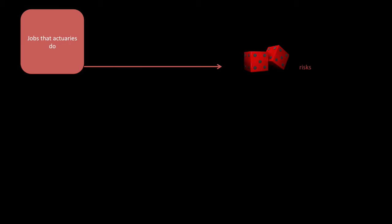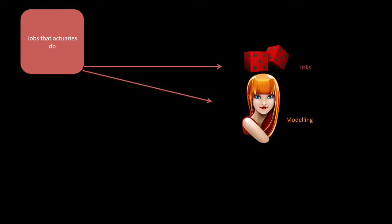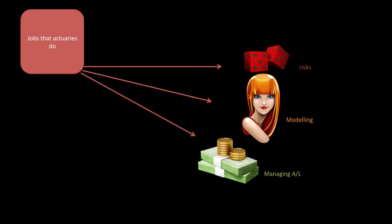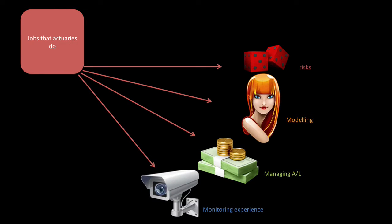Jobs that actuaries do. In general, actuaries assess, quantify, manage, and monitor risk. When it comes to risk, they can advise on reinsurance and risk transfer mechanisms. They build and test models and project and discount cash flows. They handle data, use economic and demographic analysis to estimate assumptions and decide on margins. They also manage future liabilities and advise on contribution rates, premium rates, and on investment strategy. Finally, actuaries also monitor experience — they compare the actual with expected experience, analyze any variation, and manage it.